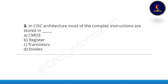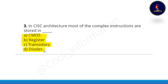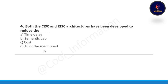Question number three: in CISC architecture, most of the complex instructions are stored in what? Option A: CMOS. Option B: Register. Option C: Transistors. Option D: Diodes. The correct option is option C, which is transistors.